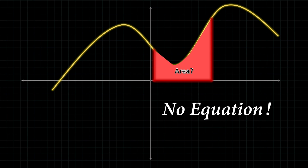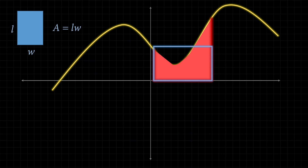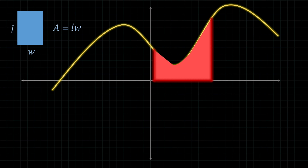Let's revisit this weird shape underneath our curve. There's no equation for this shape, so what can we do? Let's use a shape that we do have an equation for — the rectangle. Let's say I make a rectangle right here. Does the area of this rectangle accurately resemble the area of the irregular bread shape? Not really — it includes this entire green region that isn't part of the red shape, and it misses the entire purple area that is part of our shape of interest.